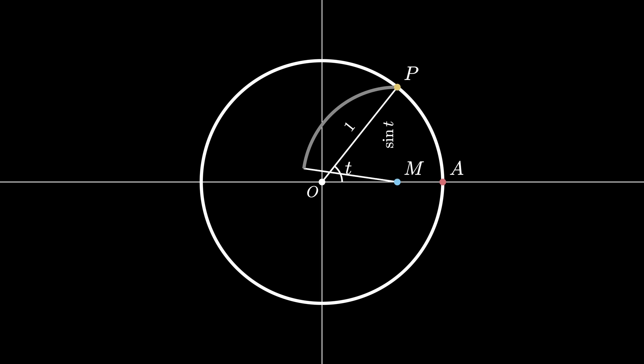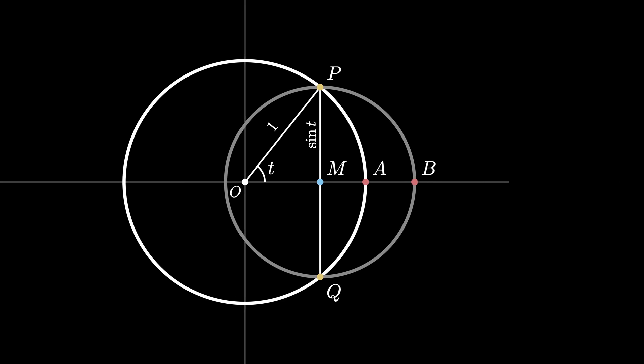Now use the line PM to generate a circle centered at M with radius sine of T. Call the intersection point of that circle in the x-axis B, and label the other intersection point between the two circles Q. Notice that the point Q lies directly below the point P, so that they're antipodal points on the circle of radius sine T.